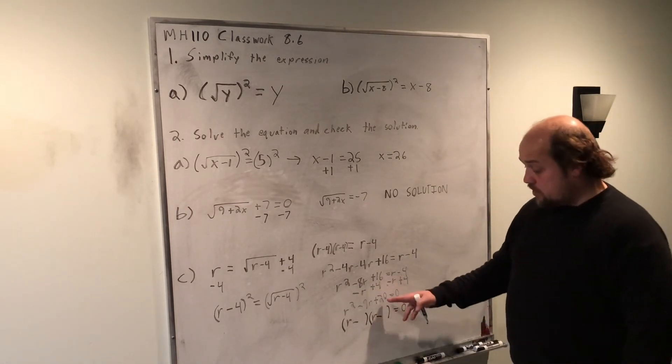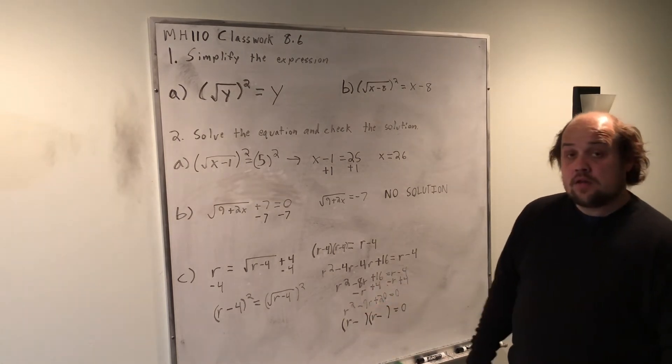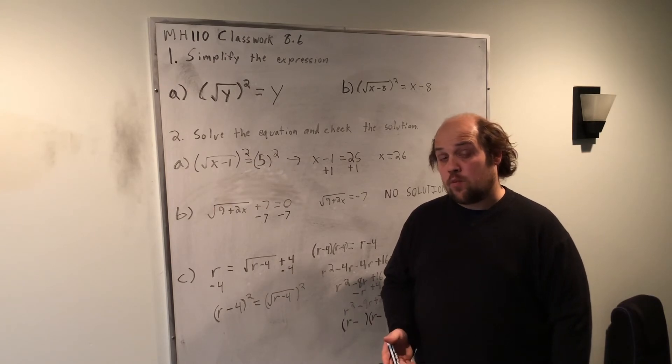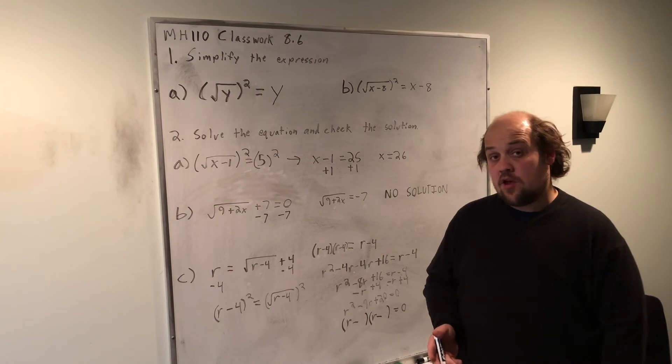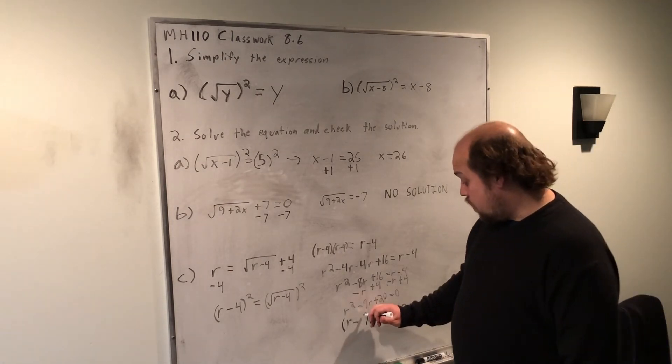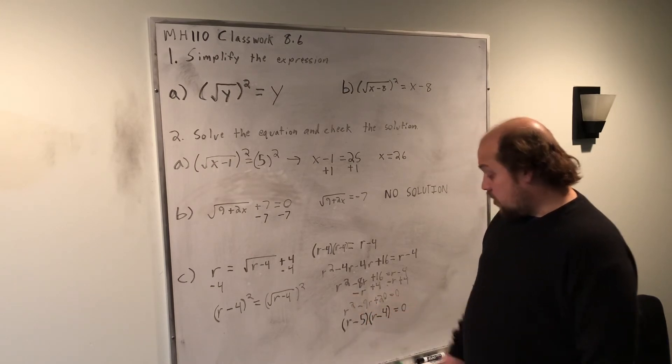Now I'm looking for two numbers that multiply to 20 and add to 9. The ways to multiply to 20 are 1 and 20, which would give me 21 when added, 2 and 10, which would give me 12 when added, or 4 and 5, which would give me 9 when added. So, 4 and 5 are the correct pair, I'm going to put the larger one here, the smaller one here.